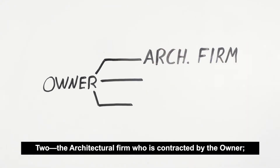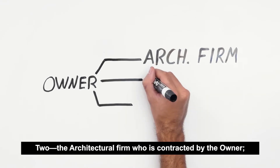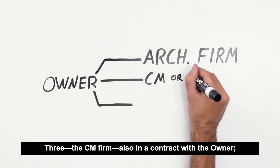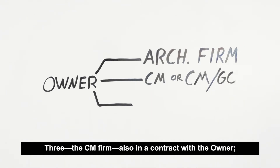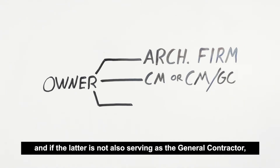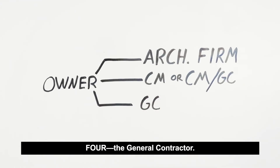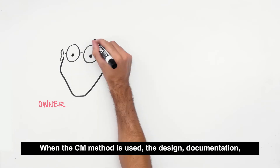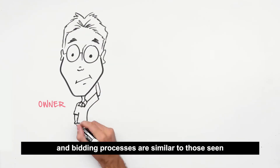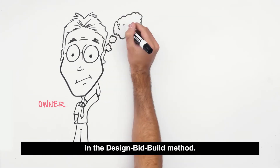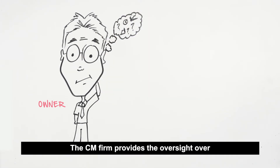The entities are: one, the owner; two, the architectural firm who is contracted by the owner; three, the CM firm, also in a contract with the owner; and four, if the CM firm is not also serving as the general contractor, the general contractor. When the CM method is used, the design, documentation, and bidding processes are similar to those seen in the Design-Bid-Build method. The CM firm provides oversight over all of these processes for the owner.